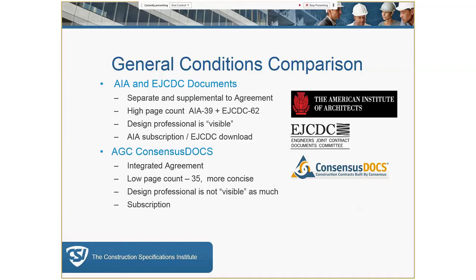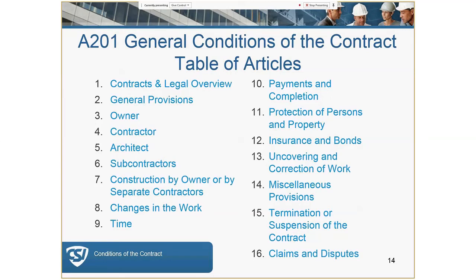The AIA documents have been around since 1911, so they're time-tested and are good for design professionals, architects, and engineers to utilize in their projects. Here's a general outline of the A-201 table of contents. It's a little confusing with the use of the word 'general' — we have general provisions, general requirements in the specs. The entire form is called general conditions, so hopefully some memorization will help.